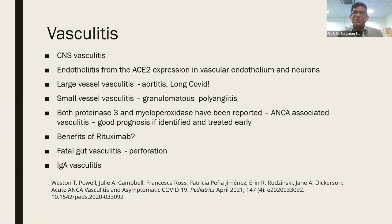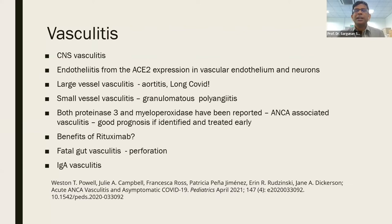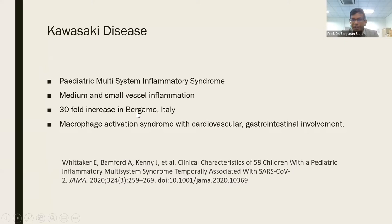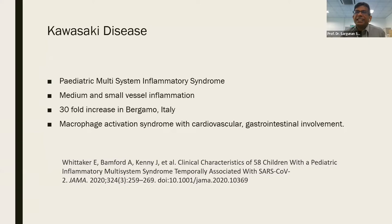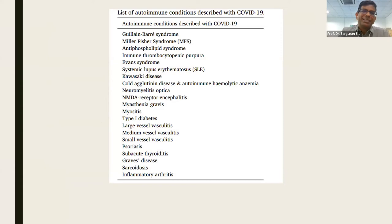Data also indicates a need to talk about large vessel vasculitis, and we are gathering data to look at what long COVID really is, because there seems to be a whole spectrum of symptoms and signs being seen in these patients. Regarding the pediatric component — Kawasaki disease — a 30-fold increase was found in Italy. The trigger was seen as medium and small vessel inflammation in cases with high concentrations of COVID-19. This is basically macrophage activation syndrome with cardiovascular and gastrointestinal involvement. Patients respond very well with high-dose aspirin and immunoglobulins.